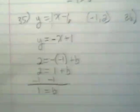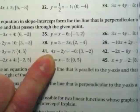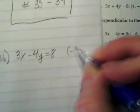For number 36, it is 3x minus 4y equals 8, and we're given negative 6, 5 as our ordered pair.